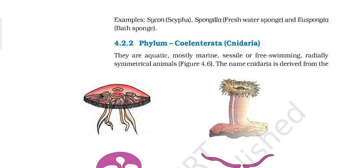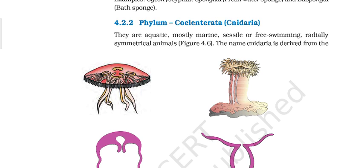Hello everyone, welcome to Class 11 Biology Volume 3. In this volume we will learn about Phylum Coelenterata. Coelenterata is commonly called Coelenterata as well as Cnidarians. It includes near about 9,000 species and they are mostly aquatic.